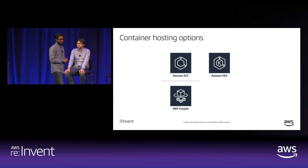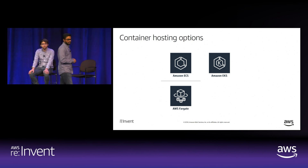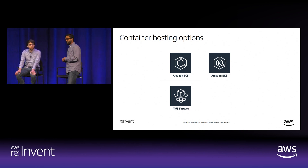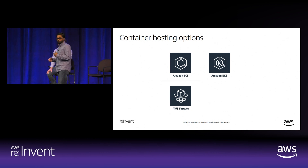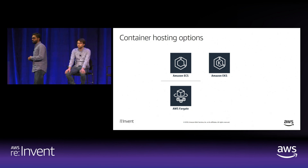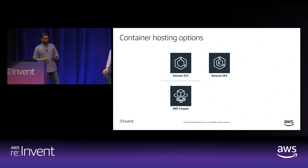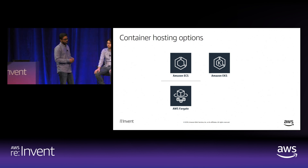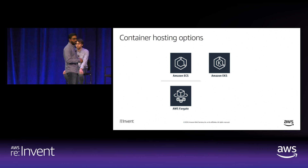ECS is Elastic Container Service. Amazon EKS is Elastic Container Service for Kubernetes. ECS is our orchestration service that you can use for your Docker applications. EKS is our Kubernetes environment. With ECS, you can also launch your applications in AWS Fargate mode.